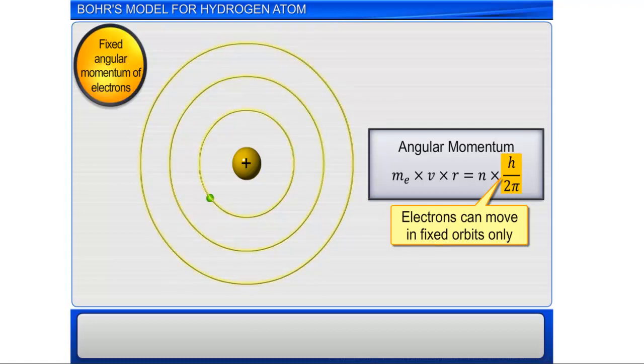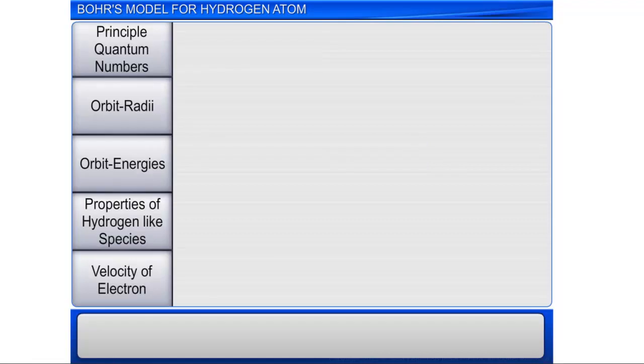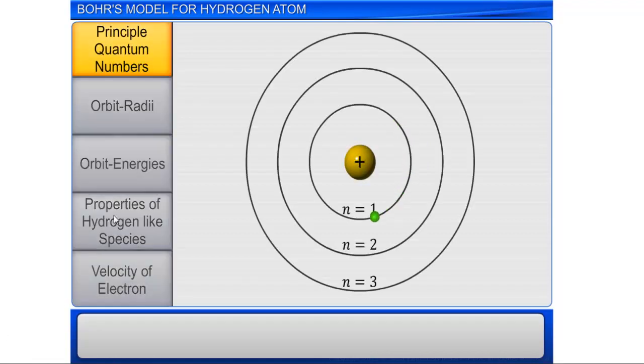Let us now get into more details of Bohr's theory of hydrogen atom. According to Bohr's theory, the stationary states for electron are numbered N is equal to 1, 2, 3, and so on. These integral numbers are called principal quantum numbers.